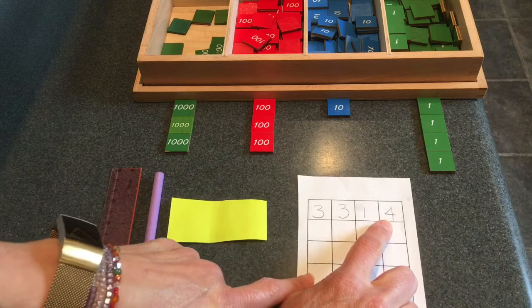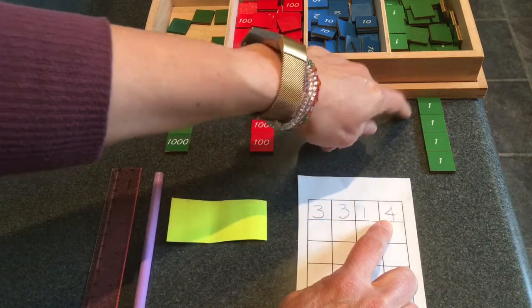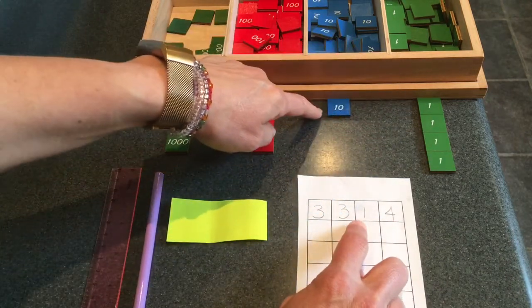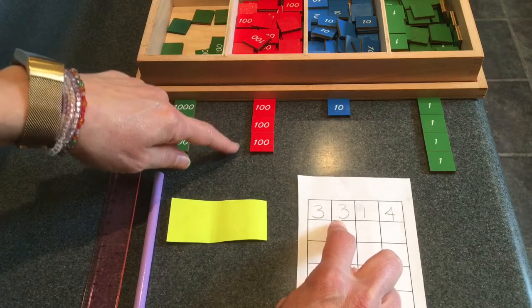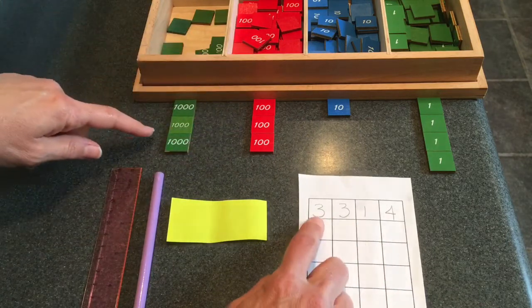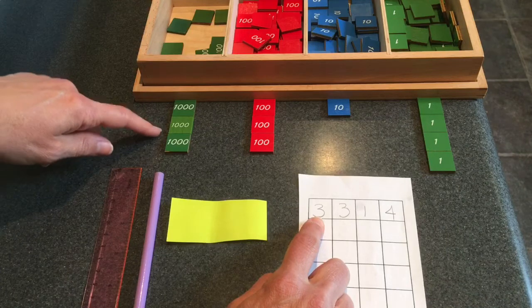Let's check together. We needed four units. One, two, three, four. One ten. Yep. Three hundreds. One, two, three. Uh-huh. And three thousands. One, two, three.